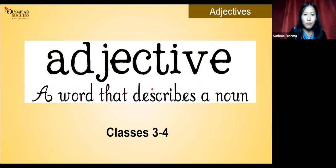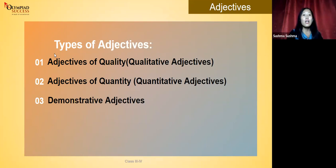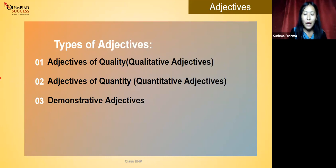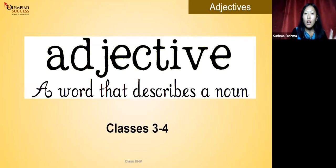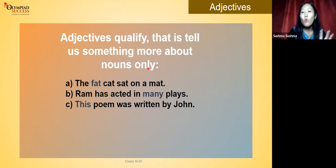When we talk about adjectives, we also have different types. The simplest definition of adjective is: a word that describes a noun. Adjectives qualify — that means they tell us something more about nouns. Look at the examples: 'The fat cat sat on a mat.' Here we have two nouns: cat and mat. When we say 'fat cat,' we're describing what kind of cat — not thin, not black, but a fat cat. So 'fat' is an adjective.